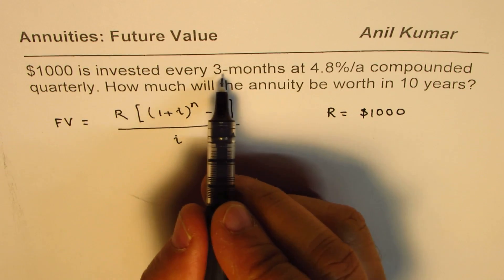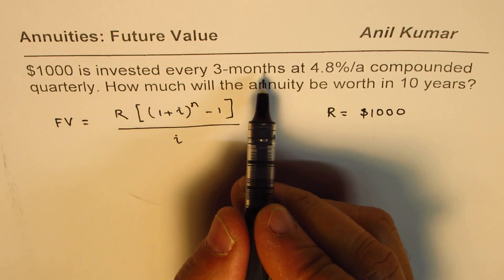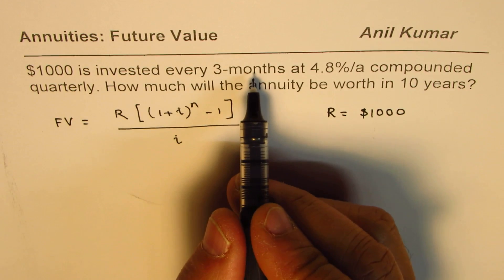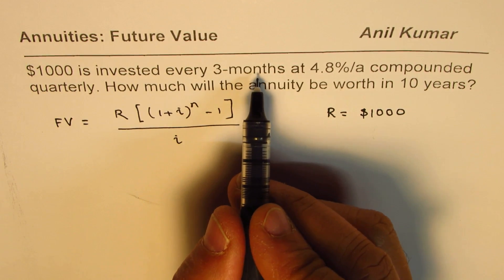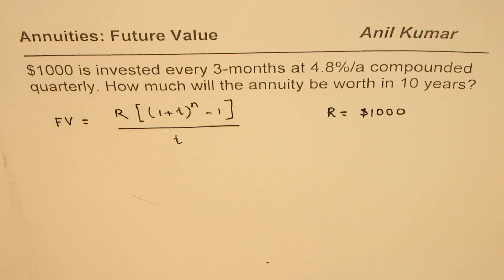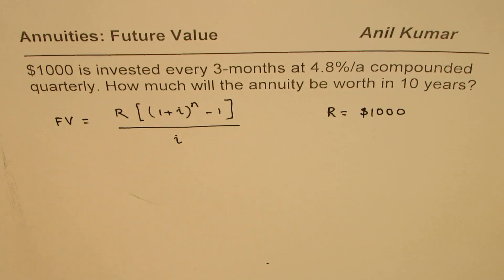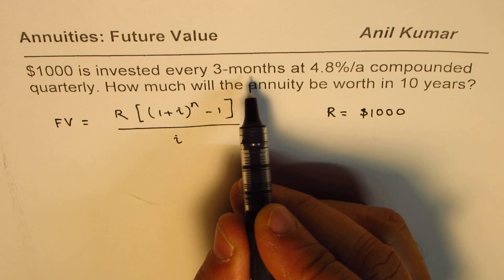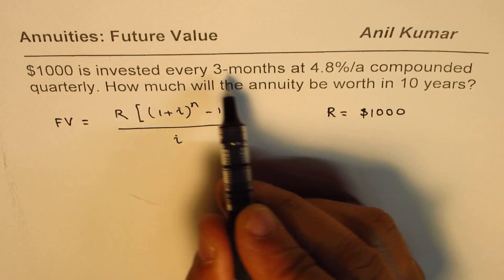Every three months means quarterly. It is a case of simple ordinary annuity because the compounding periods and the payments match every three months. You have to divide by four, so 12 divided by 3 is 4.